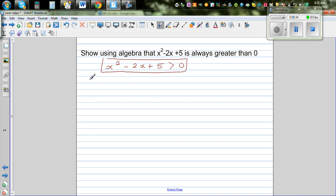Let's take x² - 2x + 5. I'm going to write this. This is the same as writing x² - 2x, and I'm going to write plus 5 here.